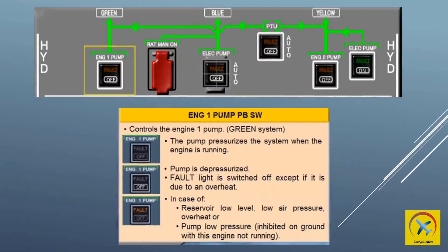Engine pump on: when an engine pump switch is selected to on, selection is indicated when all lights are extinguished, enabling the engine-driven pumps to pressurize the hydraulic system when the engine is running. Off: when an engine pump switch is selected to off, the engine-driven pump is depressurized and the off light illuminates white.